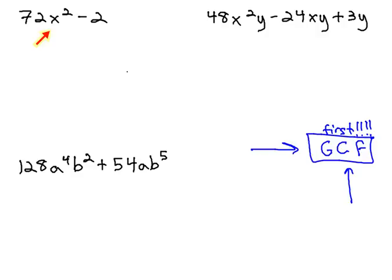This first problem, 72x squared minus 2, you'll notice has a GCF of 2. When I factor out the 2, we're left with 36x squared minus 1.